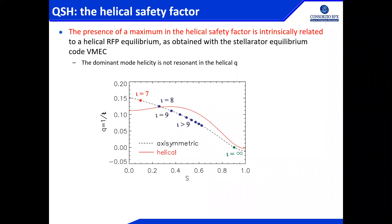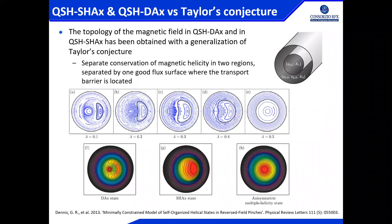This is confirmed whenever we were using VMEC, which is the equilibrium code of accelerators, giving us constraints from measurements of pickup coils — the helical component, the flux, the current, and so on. The Q profile to which it converges has a maximum value characterized by the fact that the number seven, which is the periodicity of this helix, is not resonant anymore.